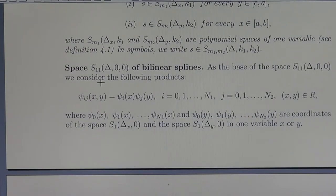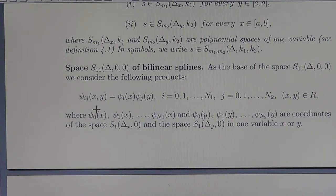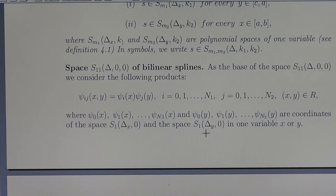The space S_{1,1}(delta, 0, 0) of bilinear splines has a basis. As the basis of this space, we consider the following products: Psi_{i,j}(x, y) = Psi_i(x) · Psi_j(y), for i from 0 to n1 and j from 0 to n2, for all (x, y) in rectangle capital R. Here Psi_0, Psi_1, ..., Psi_{n1} are coordinates of the space S_{1,1}(delta_x, 0), and Psi_0, ..., Psi_{n2} are coordinates of S_{1,1}(delta_y, 0) in one variable X or Y.